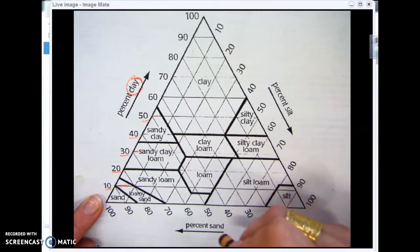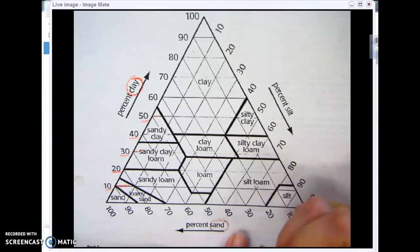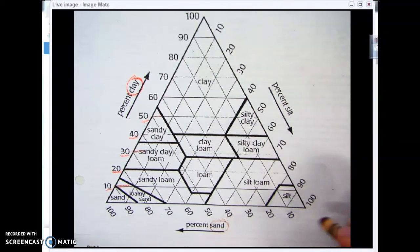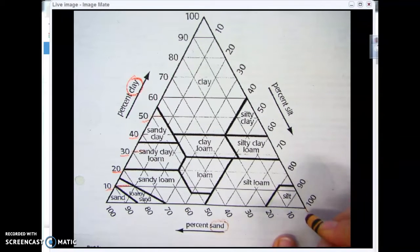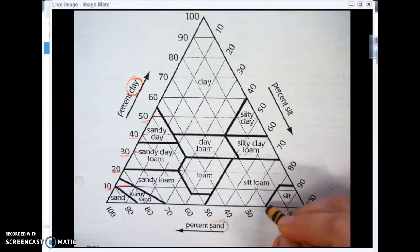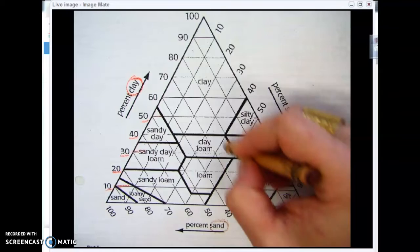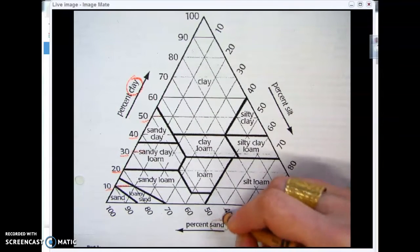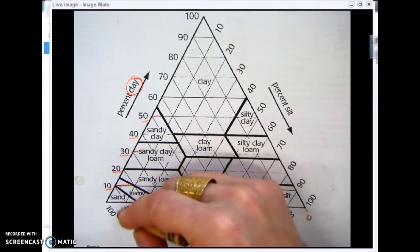Your sand is down here on this axis. Notice how the samples or the percentages are angled and they correspond with those lines. So 20% is going to be that whole line there: 30, 40, 50, 60, 70, 80, 90, 100.